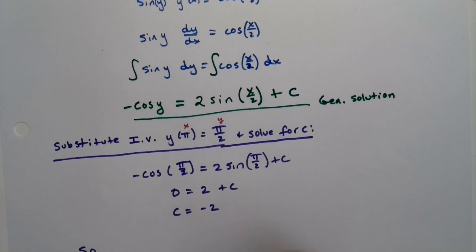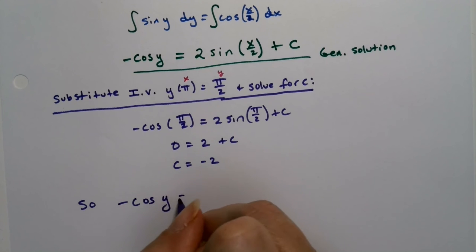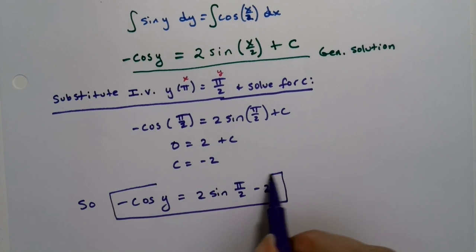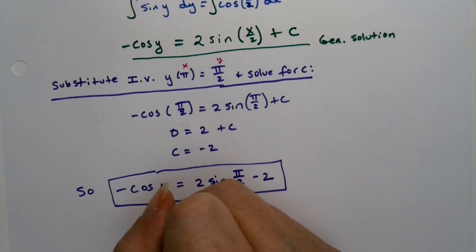And so therefore, the negative cosine of y is equal to 2 sine of x over 2, take away 2. This is our solution. And we're not going to solve it for y, we're just leaving it like it is. This is an implicit form solution.